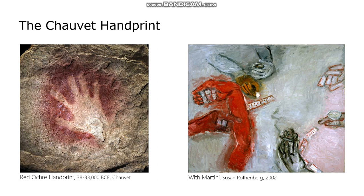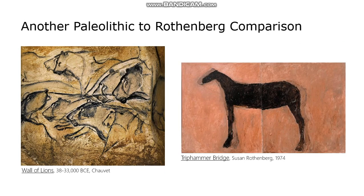I paired the red ochre handprint from Chauvet Cave with a painting by Susan Rothenberg because I thought they were an interesting pairing. I really love Rothenberg as a painter. She has a lot to say in her artwork about the world she observes and about her life, but she is also an artist who makes work for that very core, fundamental reason: just to make a thing. That thing stands as a marker to say the artist was here. I found this comparison between the Chauvet Cave wall of lions and one of Rothenberg's famous horse paintings particularly compelling.